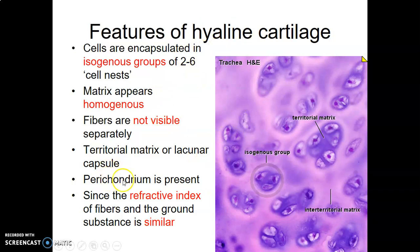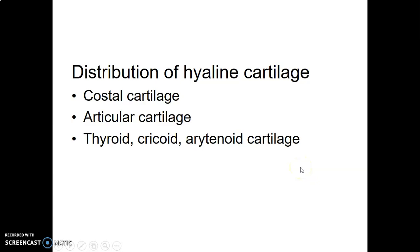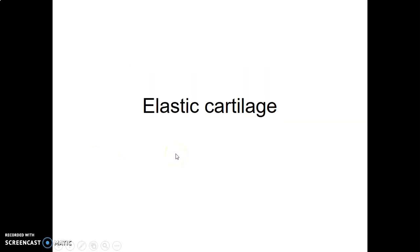It's collagen type 2 in hyaline cartilage, and the refractive index of the collagen and the ground substance is the same, so it looks clear. Hyaline cartilage has perichondrium. Where do we find hyaline cartilage? Costal cartilages of the ribs, articular cartilages in synovial joints, and cartilages of the larynx — specifically thyroid, cricoid, and arytenoid cartilages.